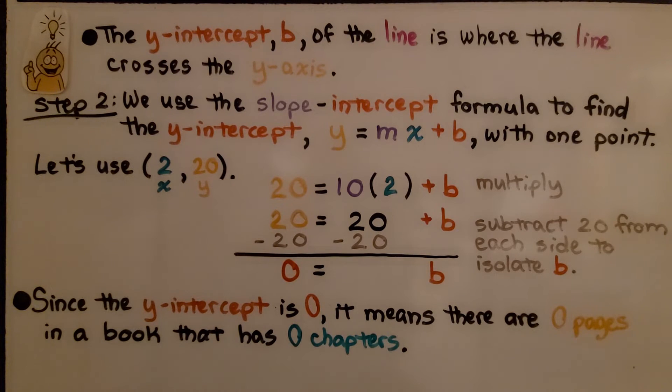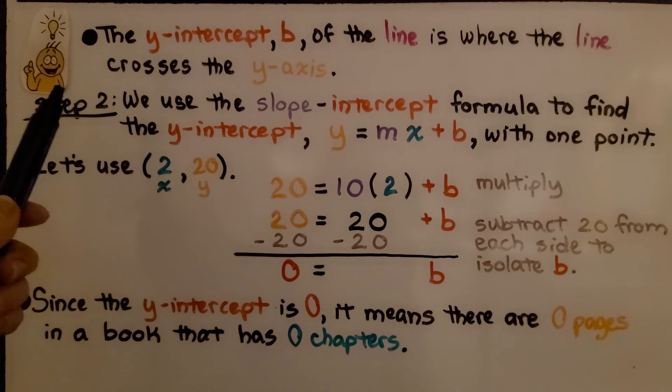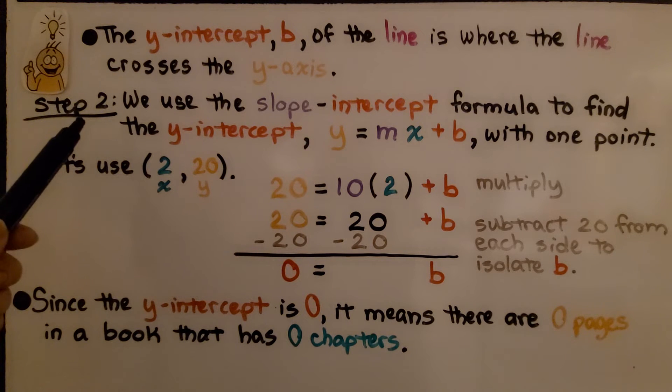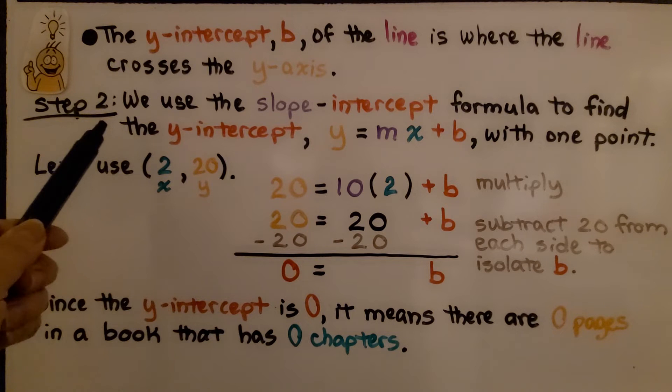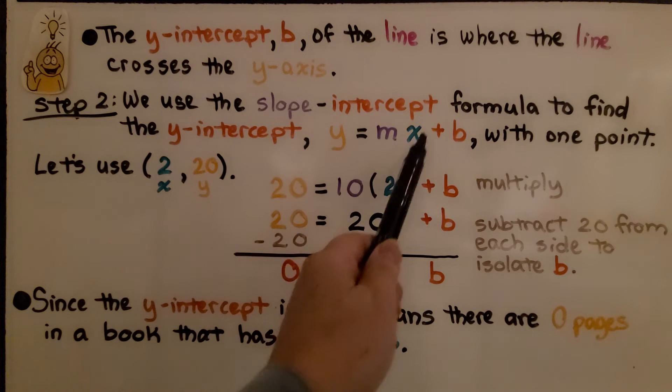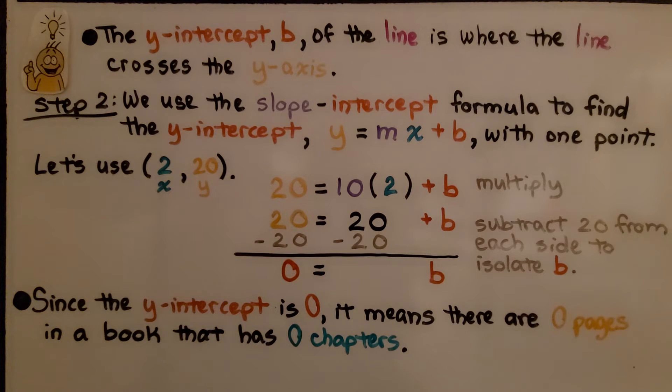Now you may remember from previous lessons that the y-intercept b of the line is where the line crosses the y-axis. Our second step, we can use the slope-intercept formula to find the y-intercept. We have y is equal to mx plus b. We can find it with one point. So let's use the point 2 for x, 20 for y.